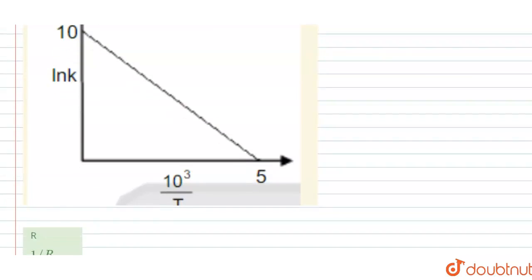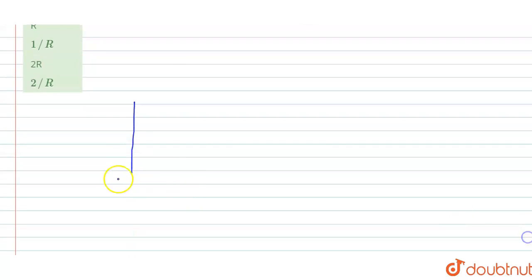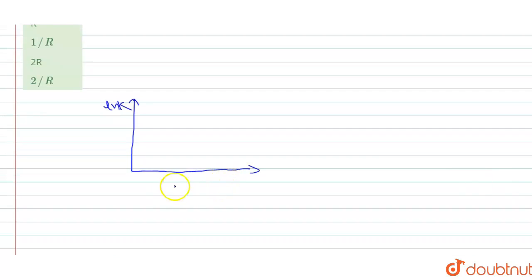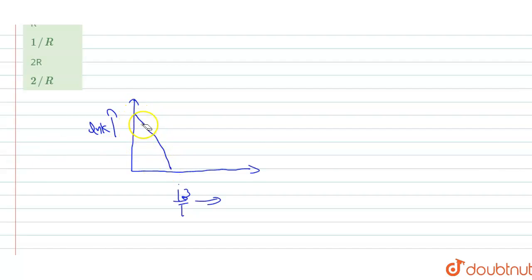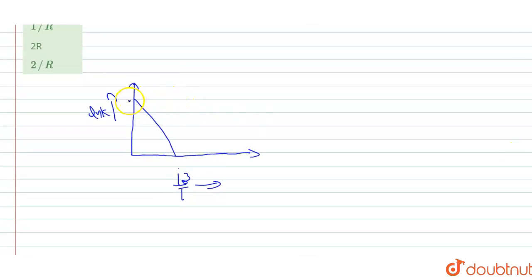The graph is between ln K versus 10³/T. On the y-axis we have ln K, and on the x-axis we have 10³/T. This is a straight line with a negative slope. Here we have the value 10 on the y-axis and the value 5 on the x-axis.